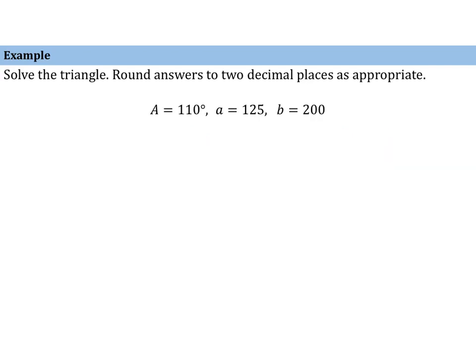Let's look at our next example. Here we have a triangle with angle A of 110 degrees. The side opposite that 110-degree angle is 125 in length, and side b — the side opposite angle B — is given to be 200. What we have here is side-side-angle, where the angle is not included.